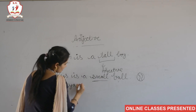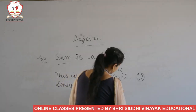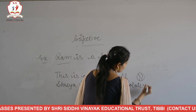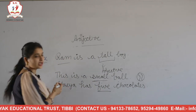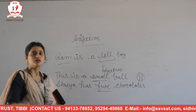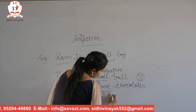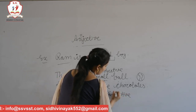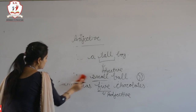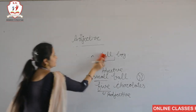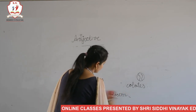Another example: Shreya has five chocolates. The quantity of chocolates describes how many chocolates Shreya has, so 'five' is an adjective. I hope it is clear what adjectives are. Now, the degrees of adjective.